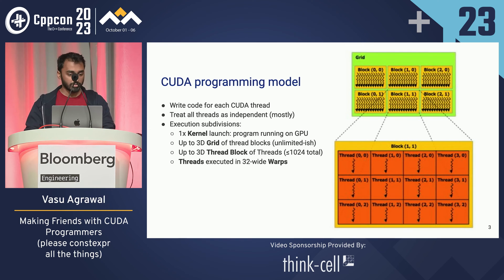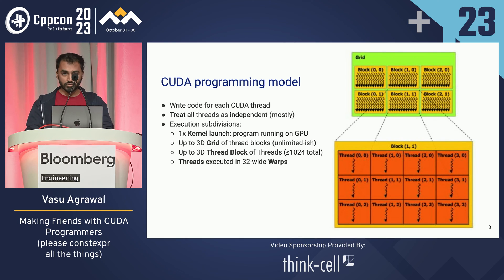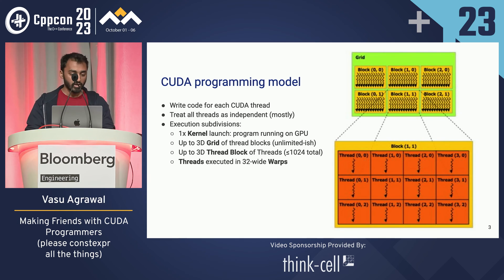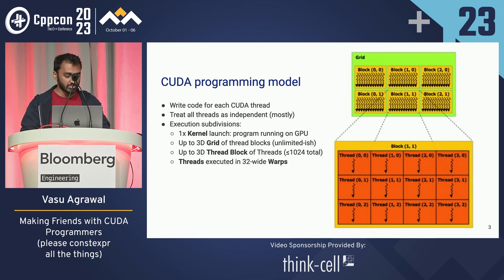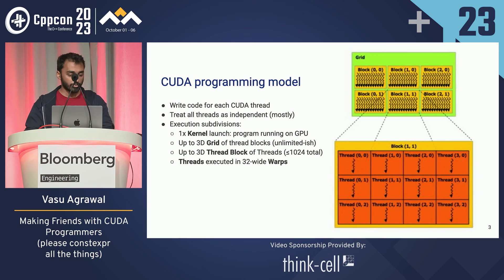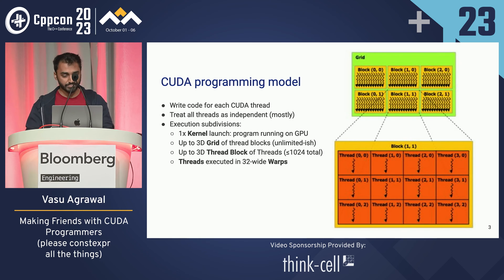When you launch a kernel in a CUDA program, what you're really doing is saying: I want to run this bit of work across the entire GPU. You subdivide your problem into grids, which are up to three-dimensional and approximately unlimited, and then each grid is subdivided into thread blocks, and those thread blocks all have warps inside. All that's to say: you have independent work, but you're grouping hierarchically.